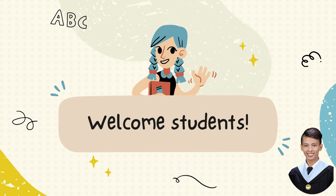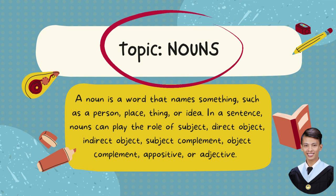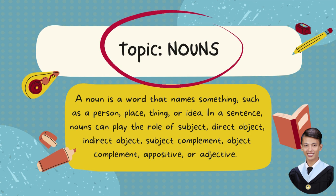So, what is a noun? A noun is a word that names something such as a person, place, thing, or idea. In a sentence, nouns can play the role of subject, direct object, indirect object, subject complement, object complement, appositive, or adjective.